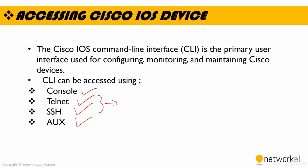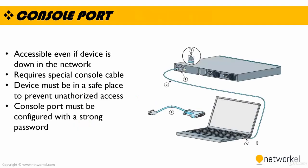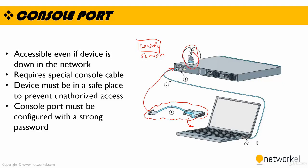Telnet and SSH are used when we try to access a Cisco IOS device remotely. The first access method is console port. If you want to use the console port, you should be next to the device, or you should be using a console server. When you are next to the Cisco IOS device, as you can see in the picture, there is a special cable to connect it. You plug one side to your computer and the other side to the console port of the Cisco device. Console port is accessible even if the device is down in the network. The device must be in a safe place to prevent unauthorized access, and the console port must be configured with a strong password.